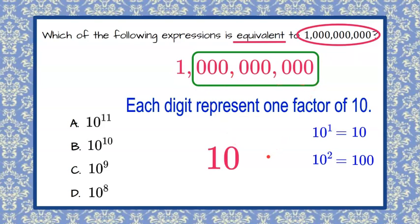So three, six, nine zeros. That means this is 10 to the ninth, and that is choice C.